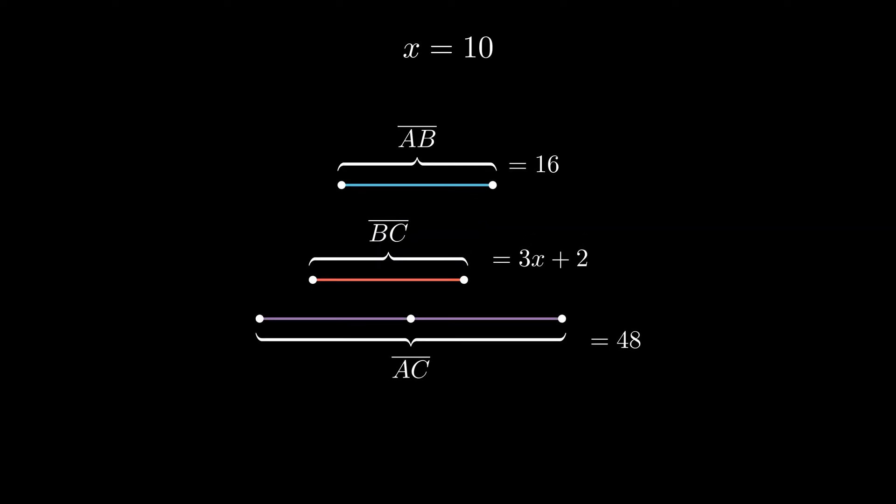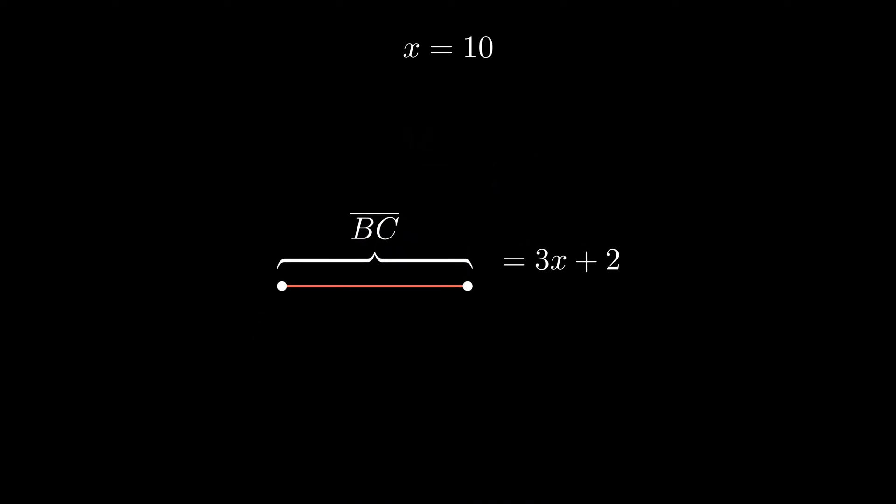We can do the same thing for line segment BC. We can write the equation as BC equals 3x plus 2 and plug in 10 for x. We can simplify the equation to get the length of 32 for line segment BC.